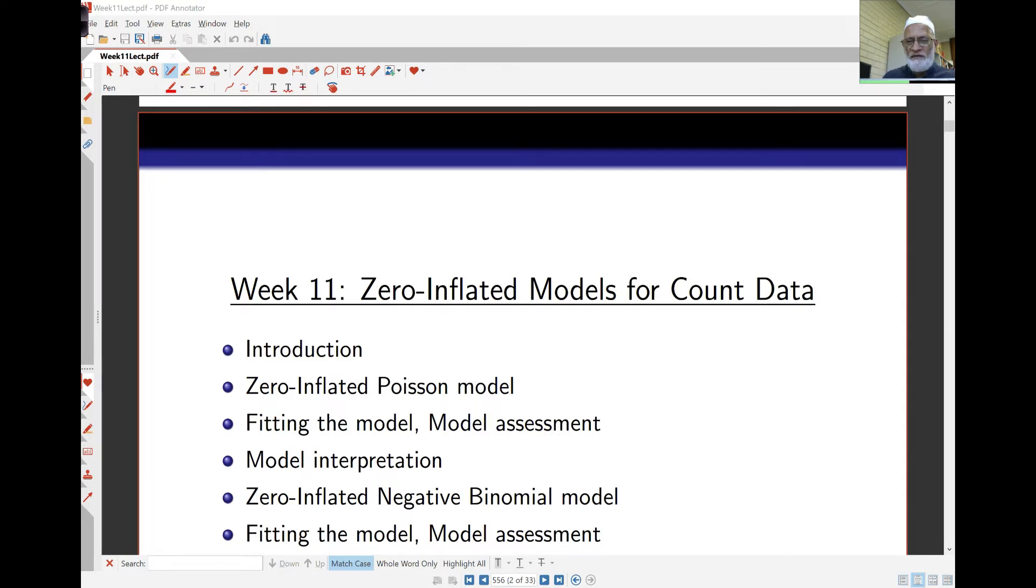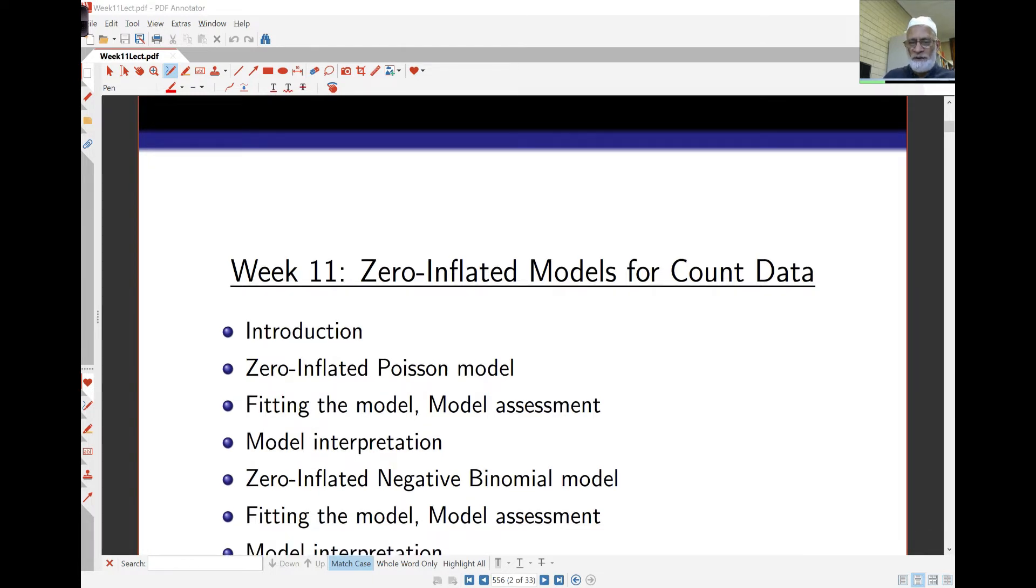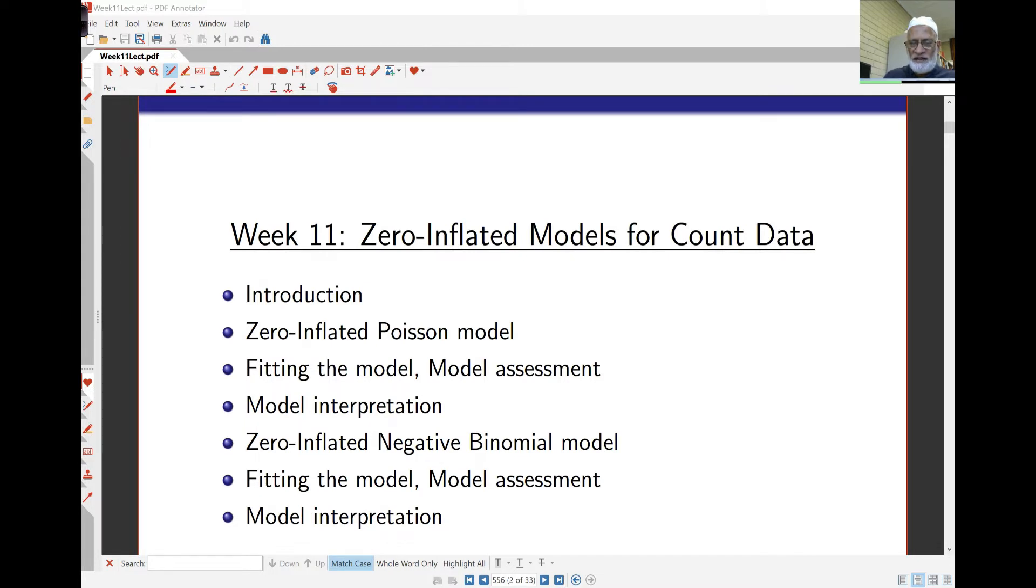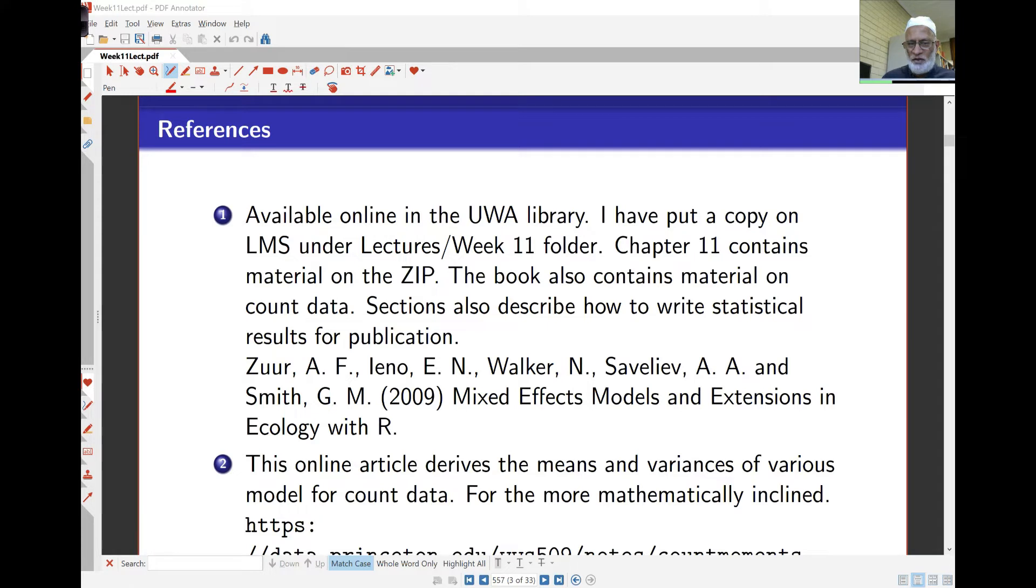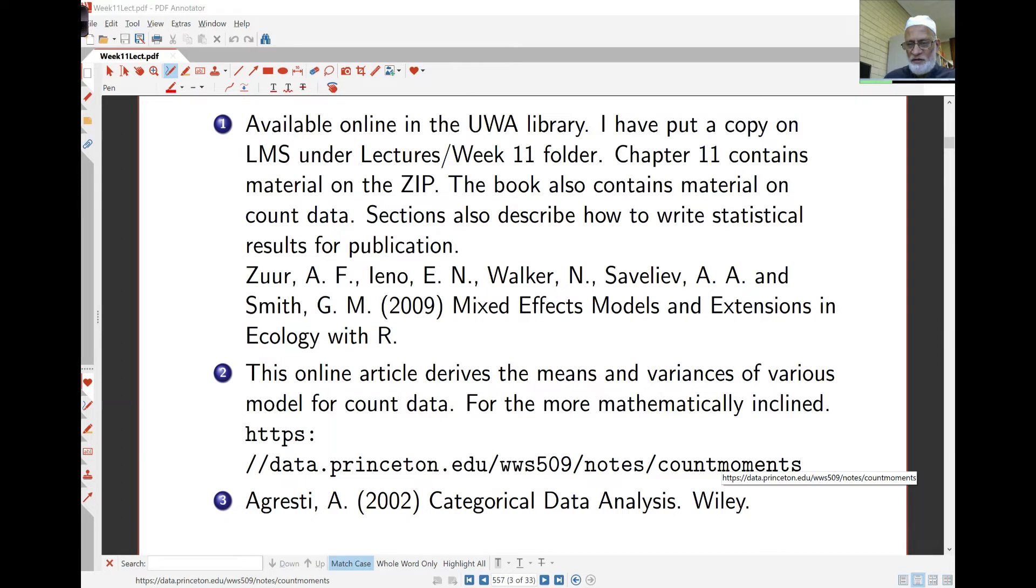This week we'll look at zero-inflated models for count data. This is another problem with Poisson data where we have more than expected number of zeros under a Poisson model. So we'll take a look at the zero-inflated Poisson model, as well as the zero-inflated negative binomial model. In the library is a book by Zuur, and I've actually put a PDF of the book on LMS, under week 11 lectures.